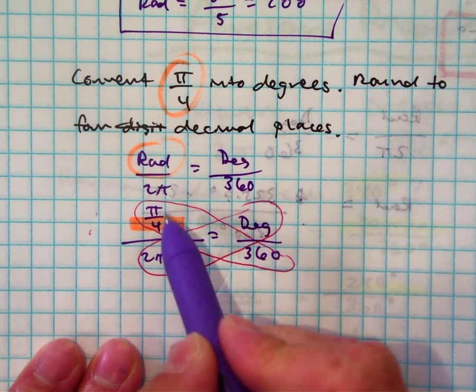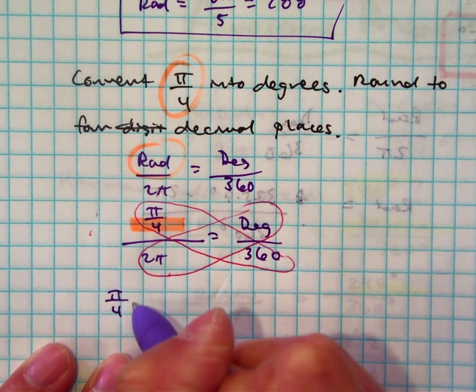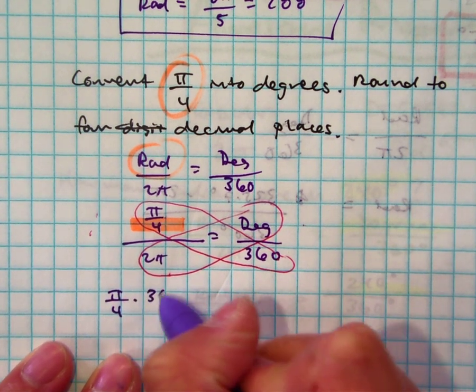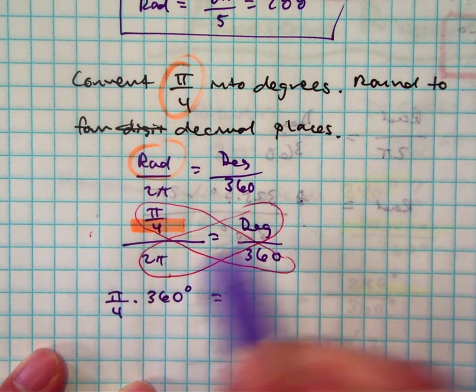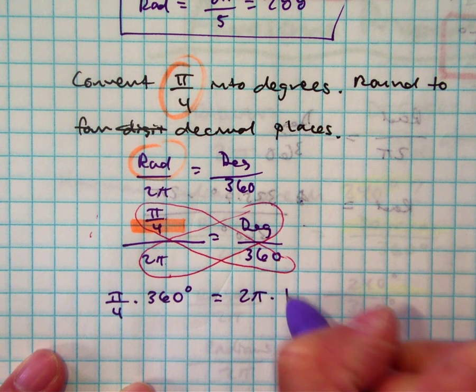So I'm going to have π over 4 times 360 degrees equal 2π times degrees.